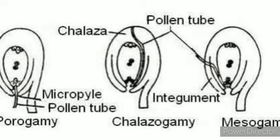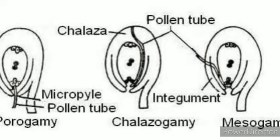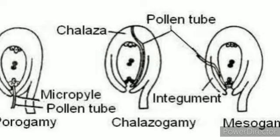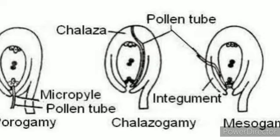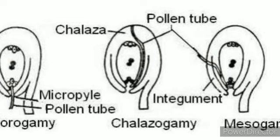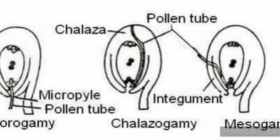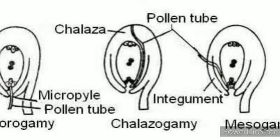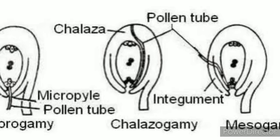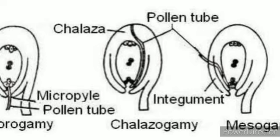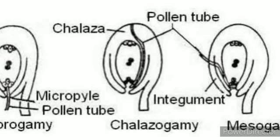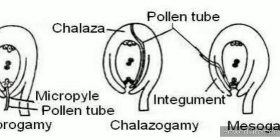Next, we will learn about the types of pollen tube entry into the ovule in sexual reproduction of flowering plants. In angiosperms, there are three ways the pollen tube enters the ovule. The first is porogamy, in which the pollen tube enters through the micropyle.